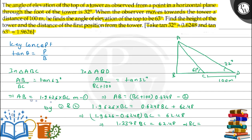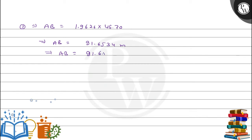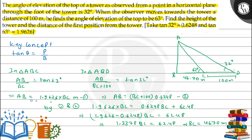To find the value of BC, we divide 62.48 by 1.3378, which gives BC = 46.70 meters. Now we can find the height of the tower AB using the first equation: AB = 1.9626 × 46.70 = 91.6534 meters, approximately 91.65 meters.